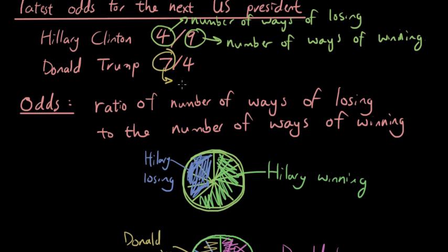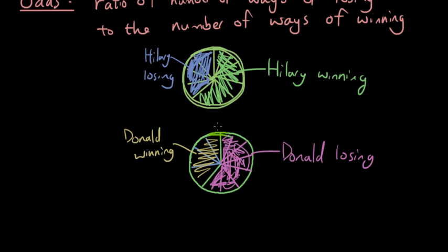So on the left hand side is the number of ways of losing. And on the right hand side is the number of ways of winning. So there are more ways that Donald Trump can lose compared to winning. Whereas Hillary, there's a bigger chance of her winning compared to losing.